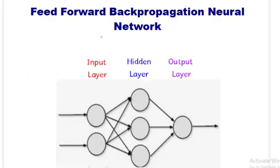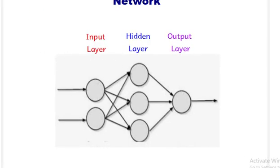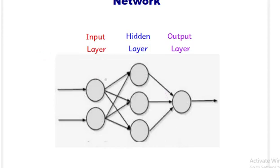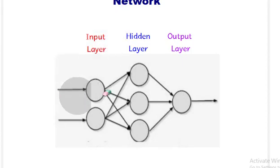So what exactly is a feed forward backpropagation neural network? This is a simple diagram of a neural network. It has an input layer, then we have the hidden layer, and then we have the output layer. The layers are connected with edges which are also called weights. We apply the inputs at the input end and these are propagated further, and here we get the output.